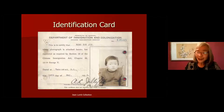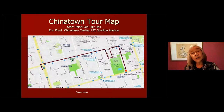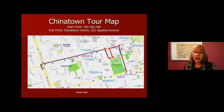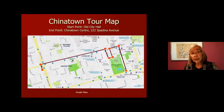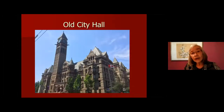Here's a picture of my mother when she was four years old. Given that historical context, we're now going to start our tour at the corner of Bay and Queen Street at Old City Hall, proceed up Bay Street to Dundas Street, go west on Dundas, then south on Elizabeth Street, along Hagerman Street, up Chestnut Street, and all the way along Dundas Street to Spadina, ending just south of Spadina at Chinatown Center.